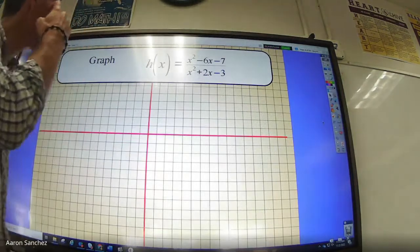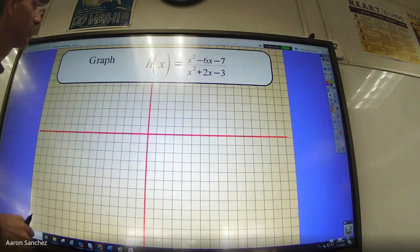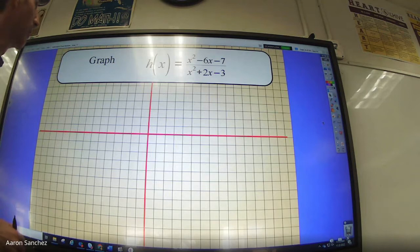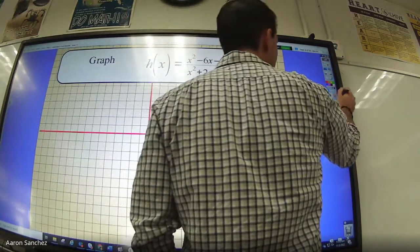Let's go ahead and graph x squared minus 6x minus 7 divided by x squared plus 2x minus 3. First step, I need to factor and set equal to zero. So I'm just going to do a quick factor.